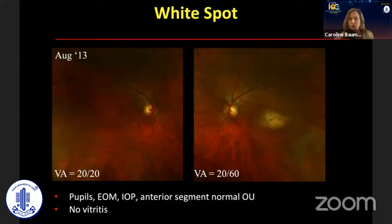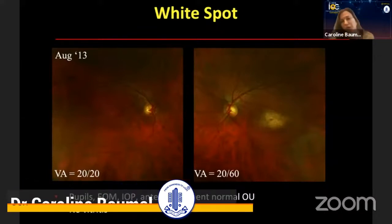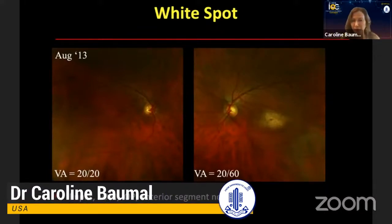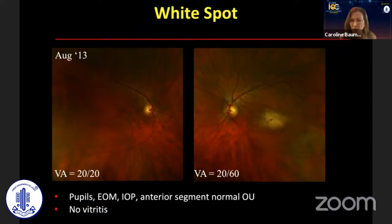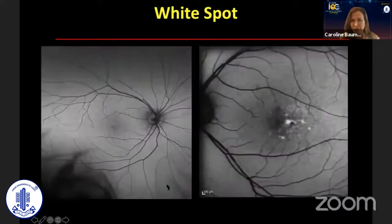These pictures are from the referring doctor. And that's not blood in the macula — that's some pigment change. Everything else is normal, no vitritis. So we see this subretinal white lesion in the left eye.